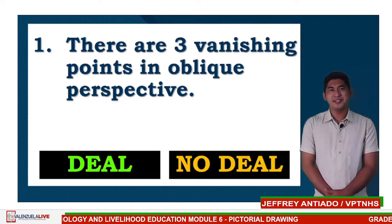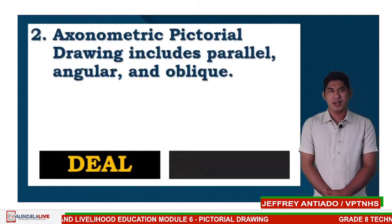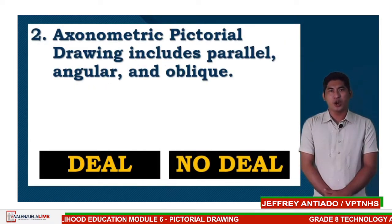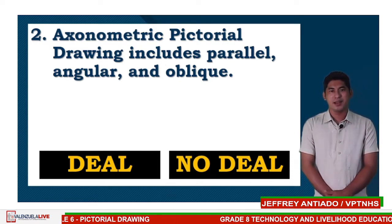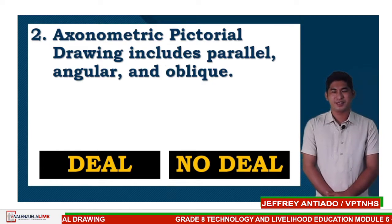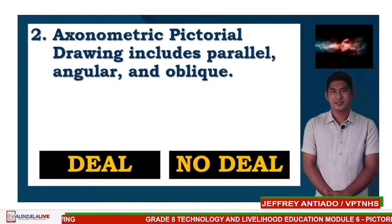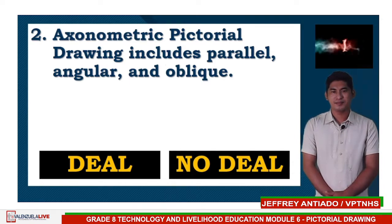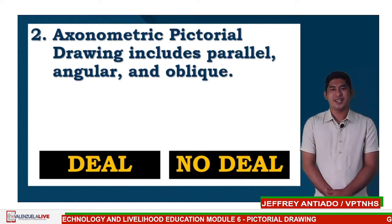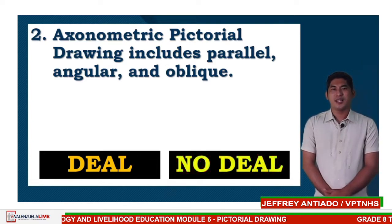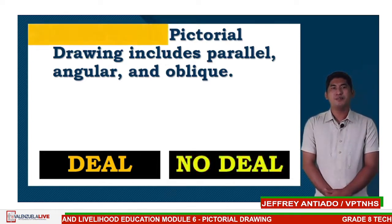Here is the second statement: Axonometric pictorial drawing includes parallel, angular, and oblique. Is it a deal or no deal? And the correct answer is, it should be perspective.